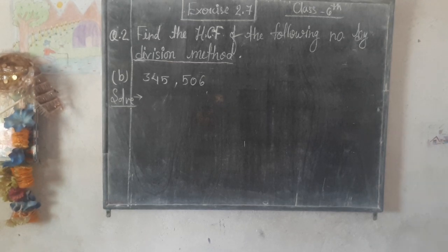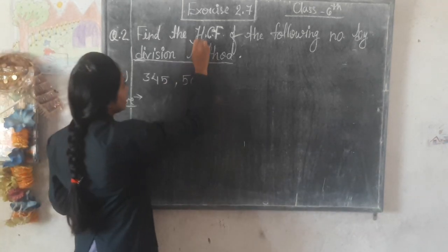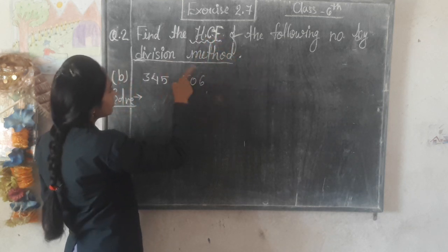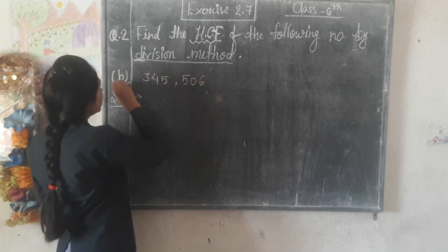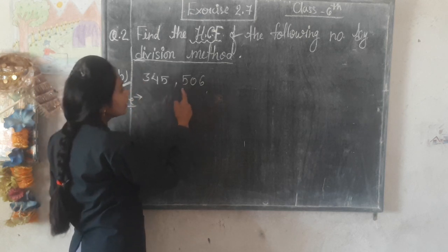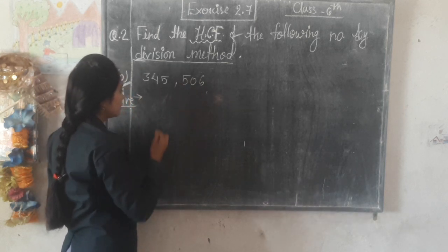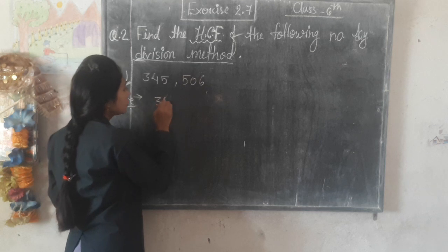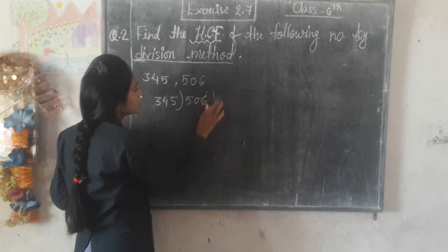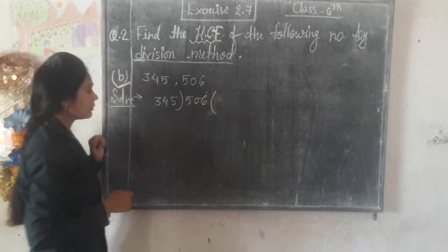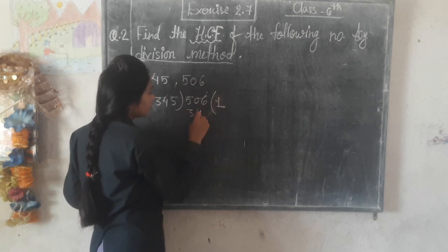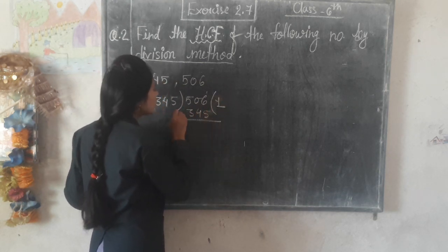Now for question B: Find the HCF — Highest Common Factor — of the following numbers by division method. The numbers are 345 and 506. The larger number 506 is divided by the smaller number 345. 506 divided by 345: it goes 1 time. 345 times 1 is 345.